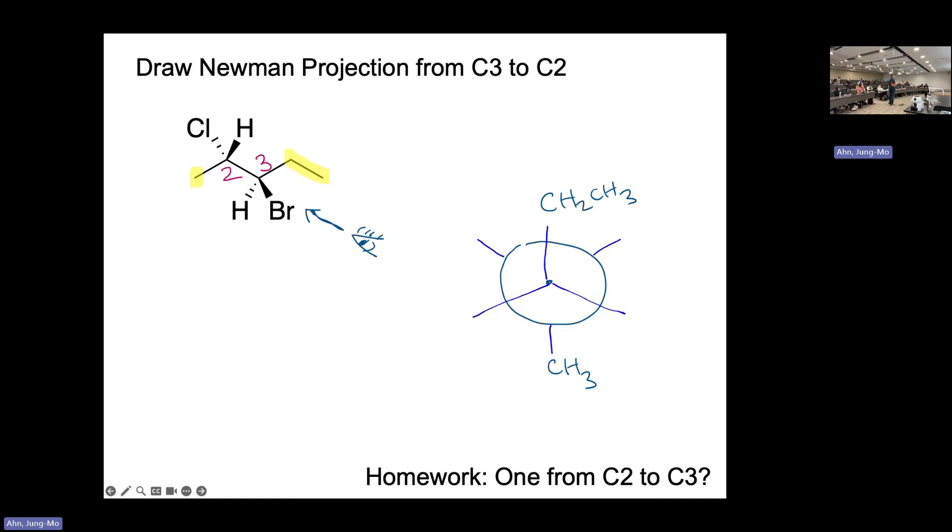The bromine is connected with the wedge, that means it's coming out of the screen. You're looking through the bond this way. Bromine is coming out of the screen, so that happens to be on your left side.